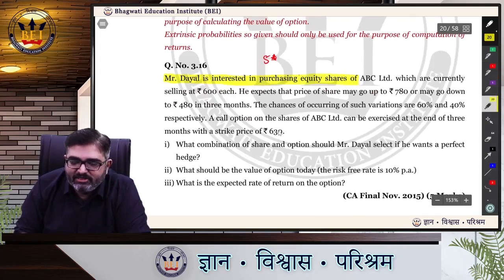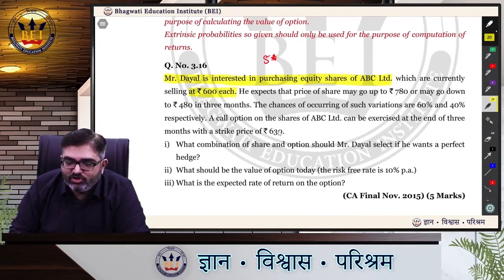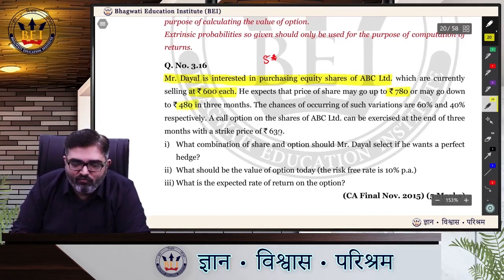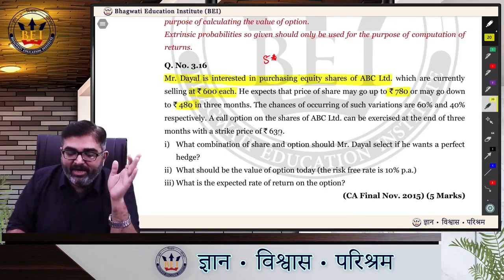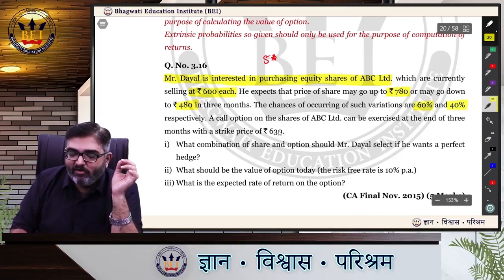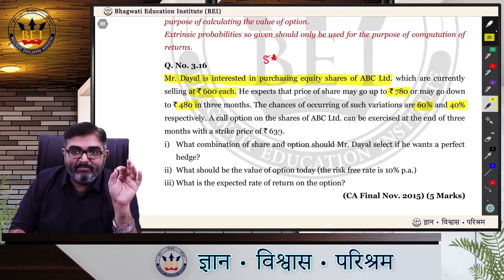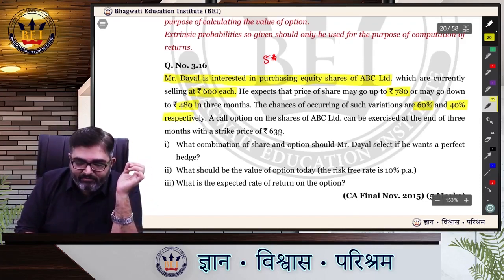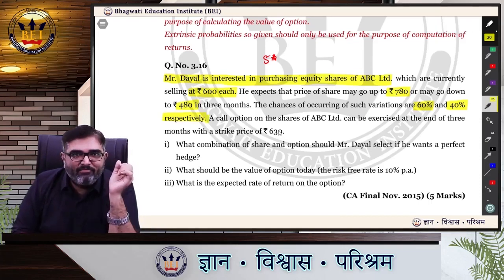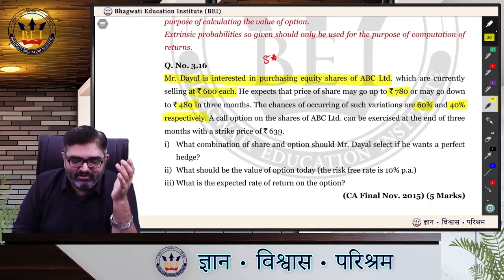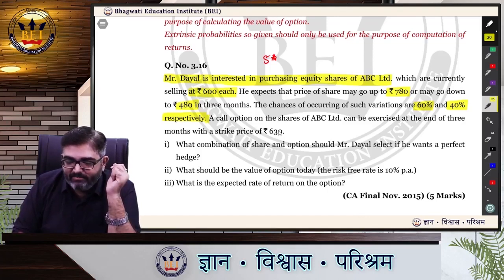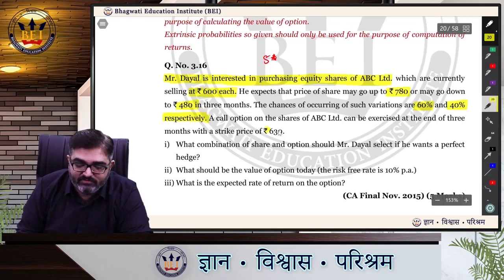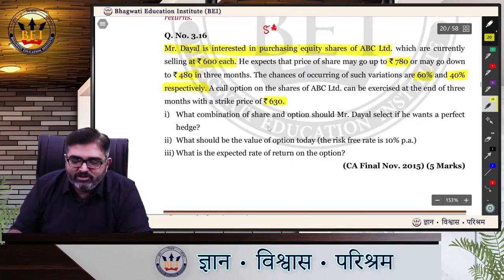Mr. Dayal is interested in purchasing equity shares of ABC Limited, which are currently selling at Rs. 600 each. He expects the price may go up to 780 or down to 480 in 3 months. The chances are 60% that the price will shoot up to 780 and 40% that it may go down to 480. A call option on the shares can be exercised at the end of 3 months with a strike of 630. What combination of share and options should Mr. Dayal select if he wants a perfect hedge?